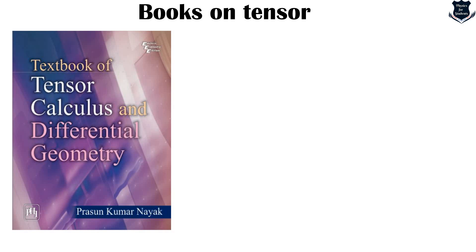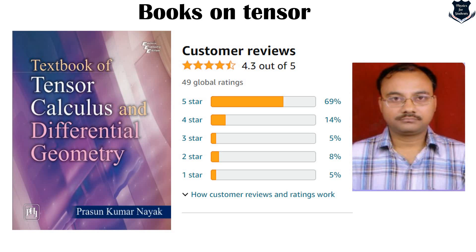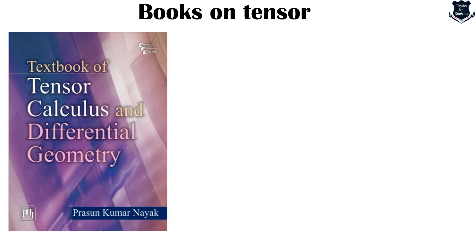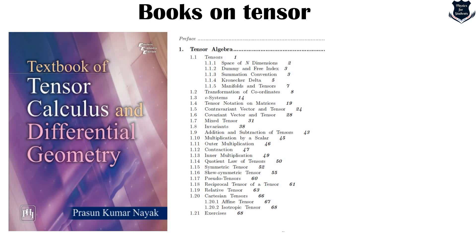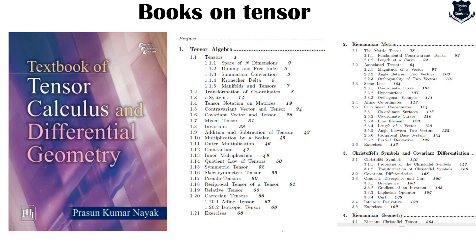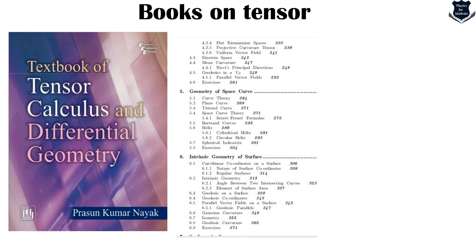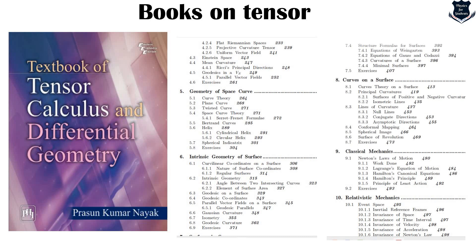Now we come to a book on differential geometry: Textbook of Tensor Calculus by Dr. Prasoon Kumar Nayak, rated 69%. The differential geometry is taught in such a simple manner that you won't face any problem. It starts with tensor algebra, then Riemannian metric, Christoffel symbols, and covariant differentiation — you will also learn a lot of physics in that part. The Riemannian geometry starts with the differential part, then moves into Einstein space, mean curvature, geometry of space, detailed curves on spaces, and classical mechanics — Newton's laws of motion, work done — then inertial frames of reference and relativistic mechanics. The beauty of the book is that it contains a lot about physics, application of tensors in general as well as in relativity and differential geometry.